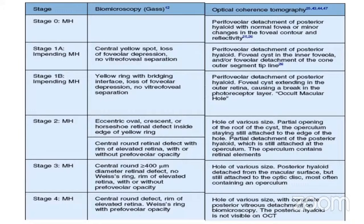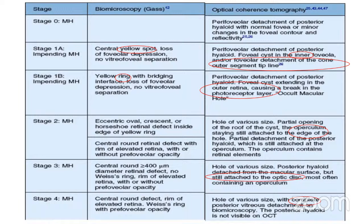This is a comparison of the two classifications: biomicroscopy by Gass versus optical coherence tomography. In stage 1a, a yellow spot and foveolar detachment of the cone outer segment tip is present. In stage 1b, there is a ring and the defect progresses towards the outer retina causing photoreceptor layer defect. In stage 2, there is an operculum that is not completely detached. In stage 3, complete detachment of the operculum but PVD still attached to the disc. In stage 4, complete PVD with development of Weiss ring.